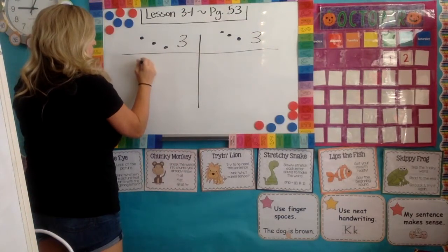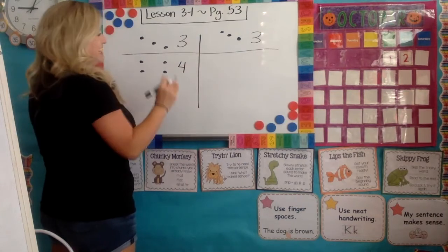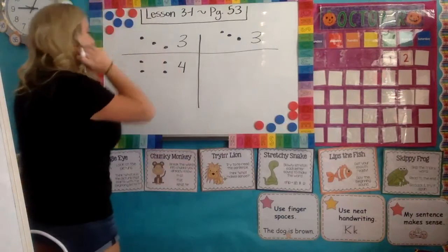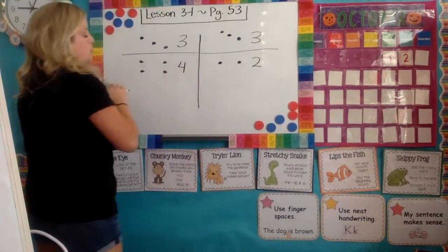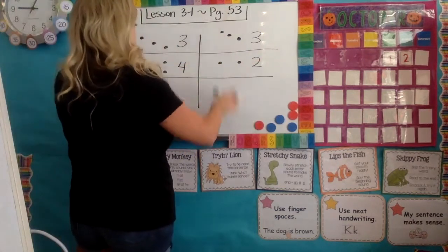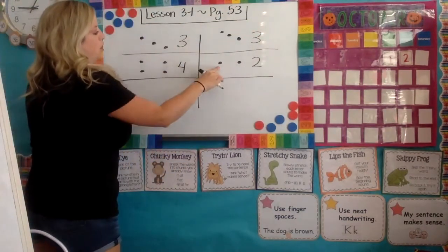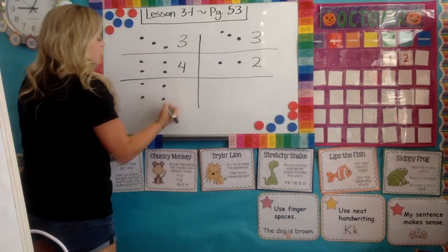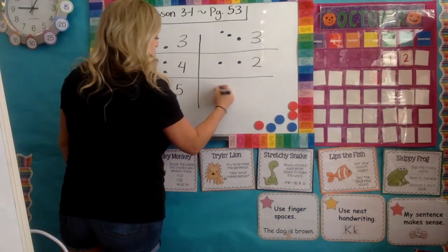I'm going to take one of these dots and bring it over here, so now I have four. I'm going to count on because I told you it's four — you're not going to count each dot one at a time; that is too slow. So we do: four... five, six. I counted on, so now I know four plus two will also get me to six.